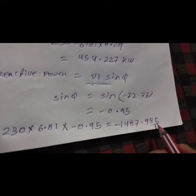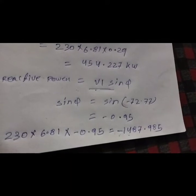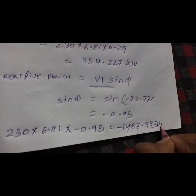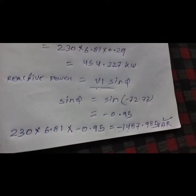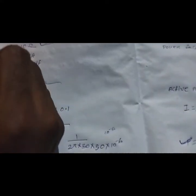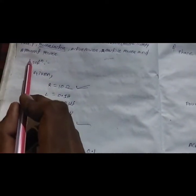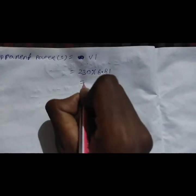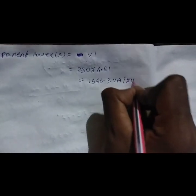Finally, find apparent power. Apparent power = V × I = 230 × 6.81 = 1566.3 VA.